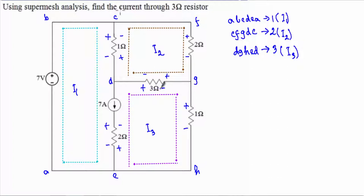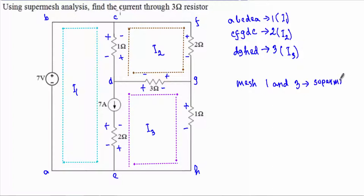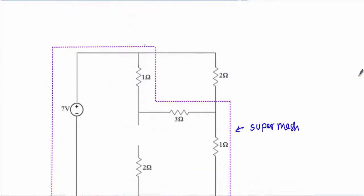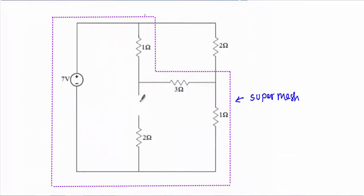Looking at mesh 3 and mesh 1, they share a common current source of 7 amperes. Therefore, if I remove this 7 ampere current source from the circuit, I get a super mesh by merging mesh 1 and mesh 3. Since the branch is now open, I also remove the 2 ohm resistor that was inside the super mesh.